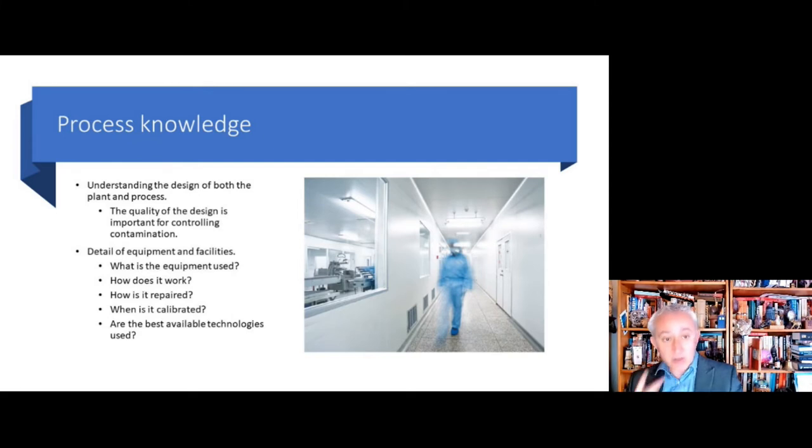To construct an effective strategy, you need to have detailed process knowledge. This is the whole process of developing, documenting, and maintaining process knowledge in order to capture and understand hazards and risks. Valuable elements include understanding the design of the plant and process. The more we can draw upon the development and quality by design, then the better the understanding and the easier we can control contamination because it would have done some of that advanced thinking up front. It's also useful to consider what type of equipment is used, what it's used for, how does it work, how is it repaired, when is it contaminated, what are the best control measures to have around that piece of equipment.